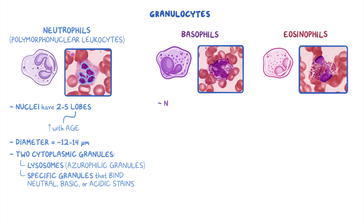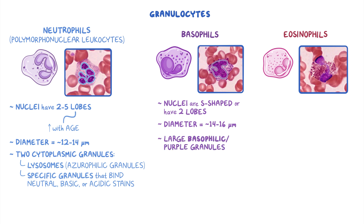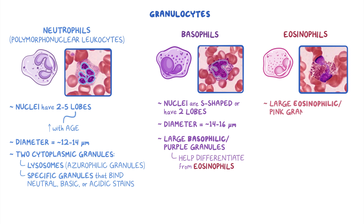Basophils have nuclei that are either S-shaped or have 2 lobes and have diameters that range from 14-16 micrometers. Basophils also have large basophilic or purple granules, which help to differentiate them from eosinophils, which have large eosinophilic or pink granules instead. Eosinophils are often larger than neutrophils with a diameter between 12-17 micrometers and nuclei that have 2 lobes.